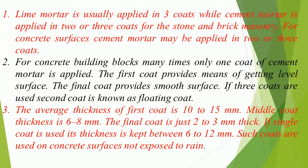Lime mortar is usually applied in 3 coats while cement mortar is applied in 2 or 3 coats for stone and brick masonry. For concrete surfaces, cement mortar may be applied in 2 or 3 coats. For concrete building blocks, many times only 1 coat of cement mortar is applied. The first coat provides a level surface, the final coat provides a smooth surface. If 3 coats are used, the 2nd coat is known as the floating coat.